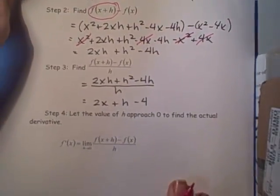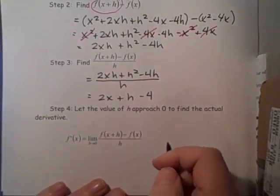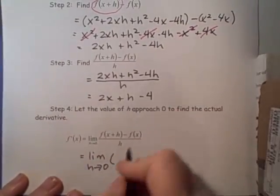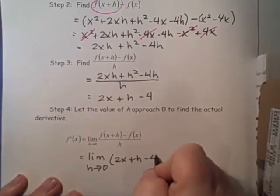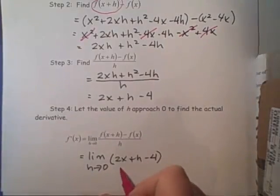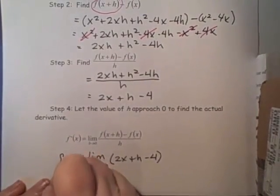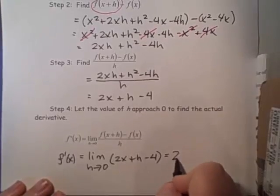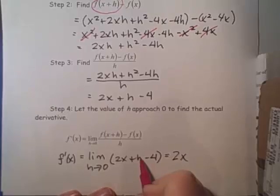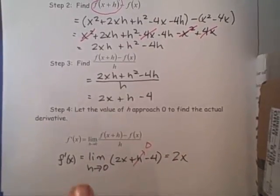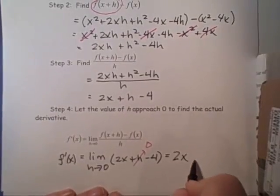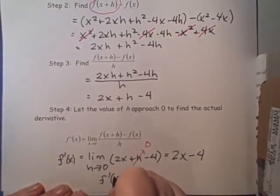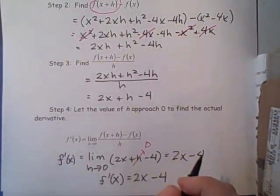Our final step is to look at what happens when h goes to zero. Our derivative is the limit as h approaches zero of 2x plus h minus 4. Looking at this term by term: as h tends toward zero, the 2x stays the same; the h term goes to zero; and then we have minus 4. So our derivative f prime of x is 2x minus 4.